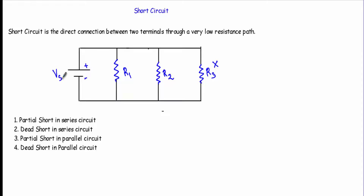The third case is a partial short circuit in a parallel circuit. Here we have R1, R2, and R3 connected in parallel across voltage source Vs. A partial short circuit occurs if only a certain portion of any parallel branch gets shorted — for example, some portion of R3 gets shorted. Due to this, the effective value of R3 is reduced, which reduces the total resistance of the circuit, causing higher current to flow.